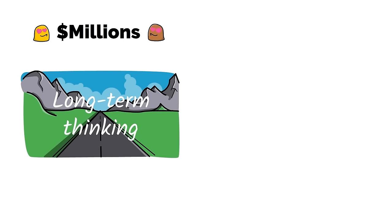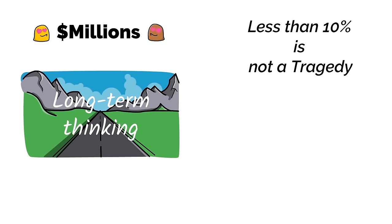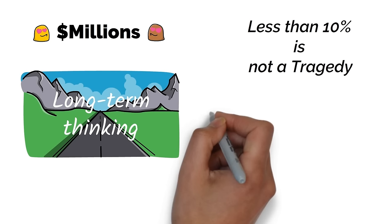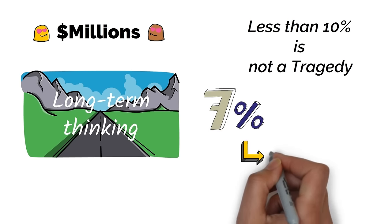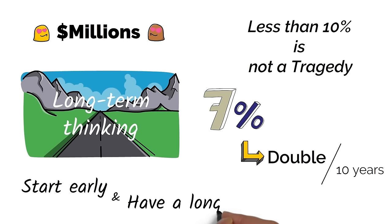It's not a tragedy if she doesn't get 10%, even 7% will double every 10 years. The key is to start early and have a long runway.